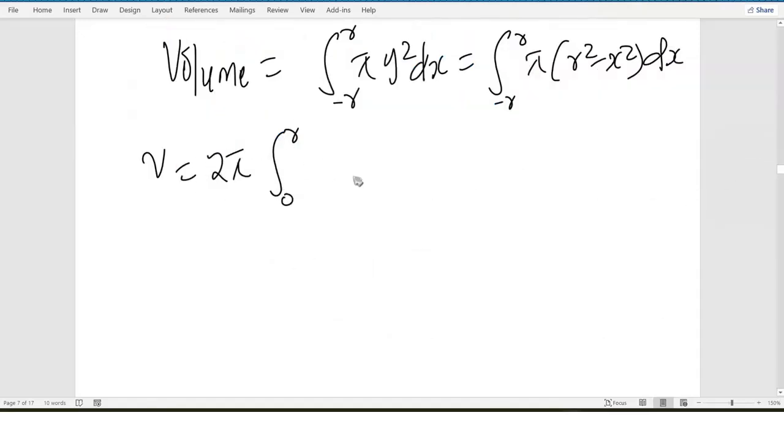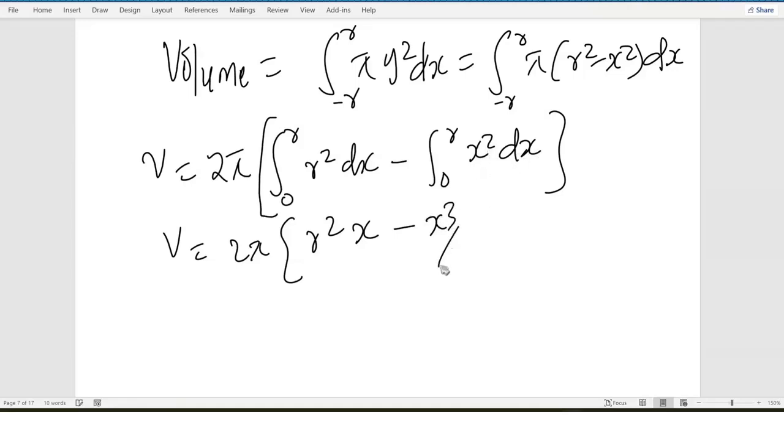So, twice pi, I'll have the total volume, and this is going to be r-squared with respect to x, minus integrating from 0 to r of x-squared with respect to x. So, volume will be 2 pi into, if I integrate this with respect to x, it still remains r-squared, but x. Then, minus x-squared integrated, I'll have x-cubed out of 3 from 0 to r.